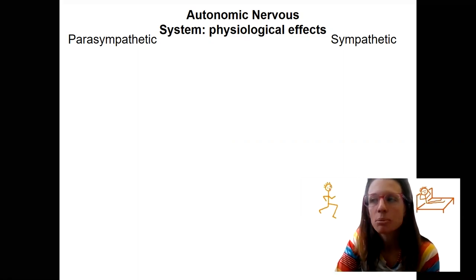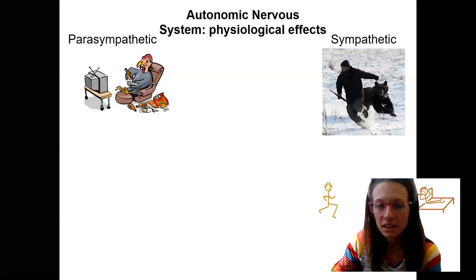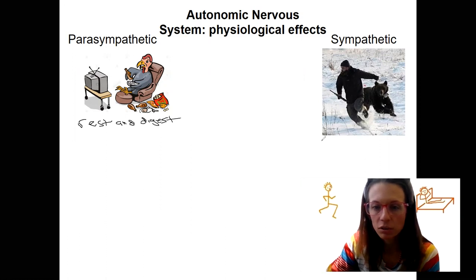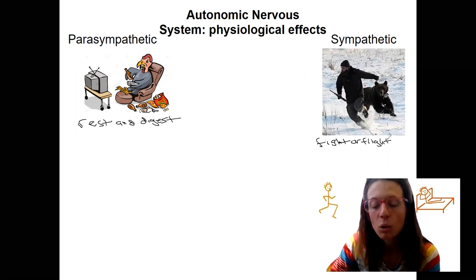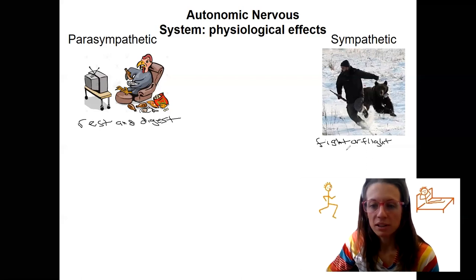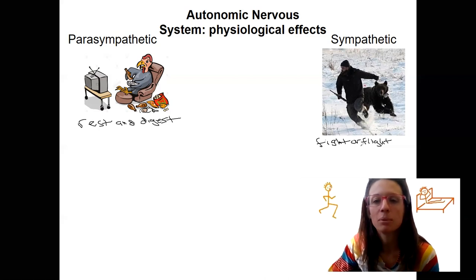These are also known as 'rest and digest' and 'fight or flight.' Some people add in more F's — freeze is one of them. Another F we'll actually come back to, as it represents a coordinated parasympathetic and sympathetic response in terms of reproductive behaviors.